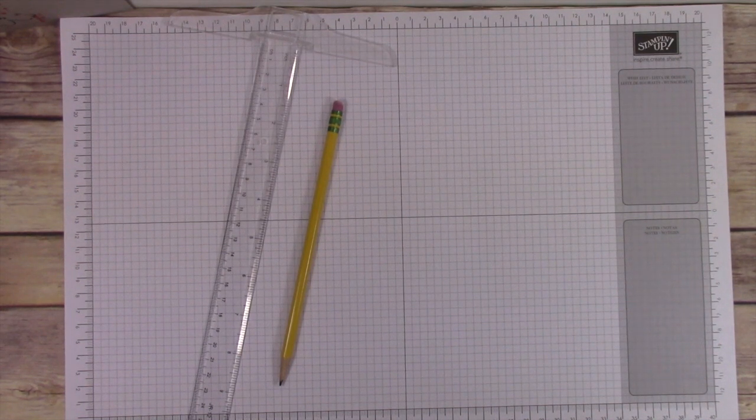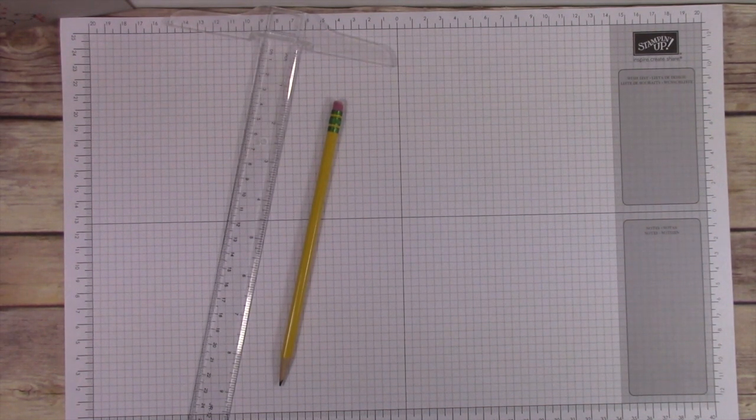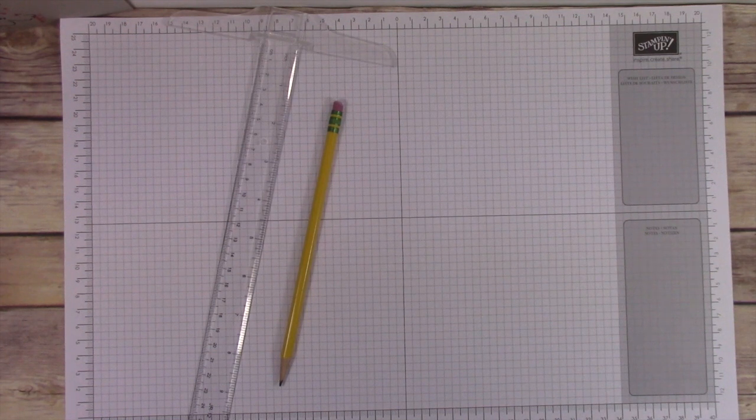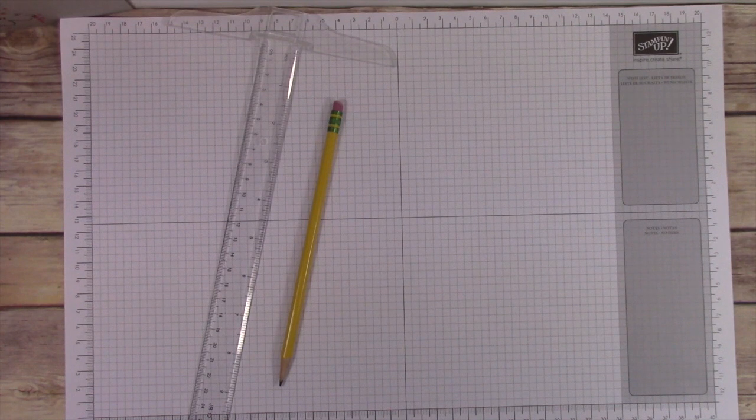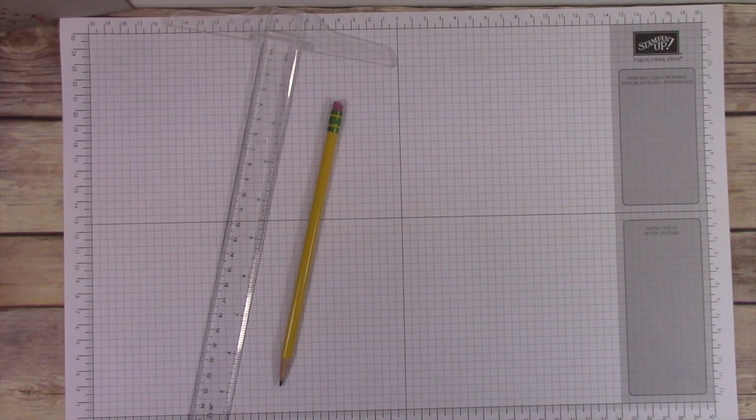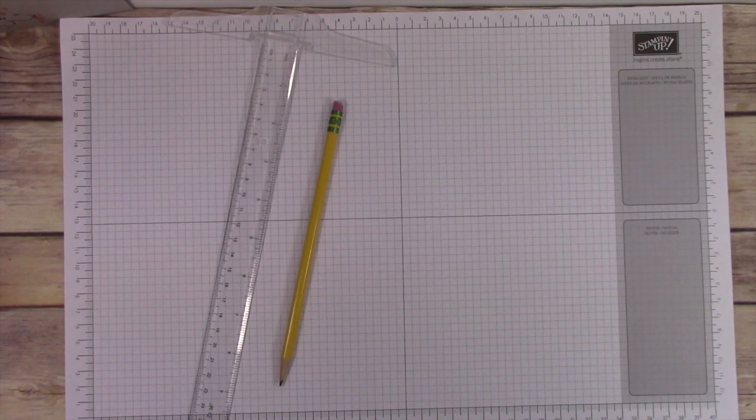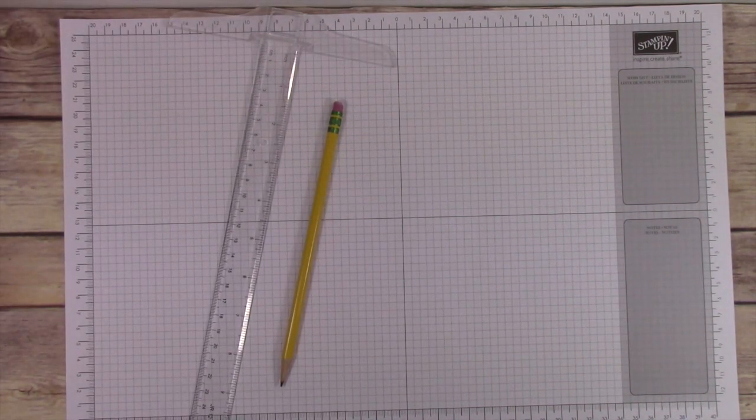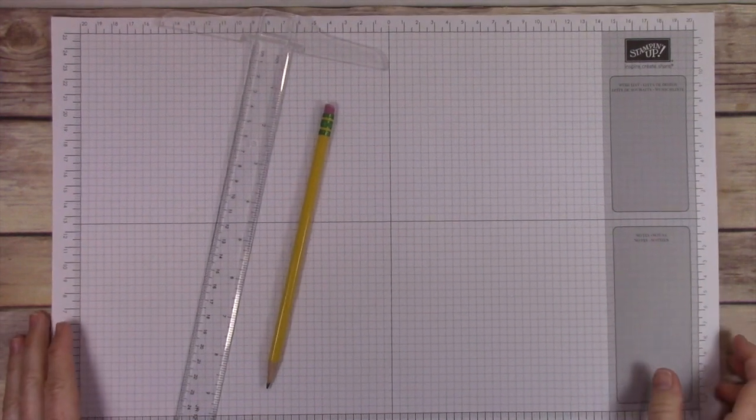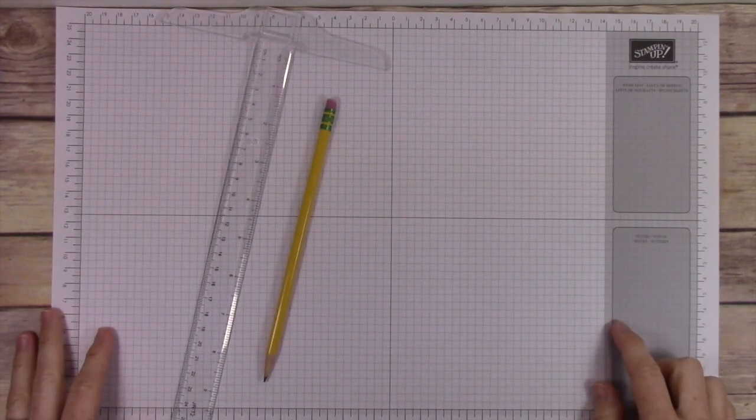You're going to get six banner pieces out of one sheet of 12 by 12 paper, so I just want you to know that ahead of time. I'm going to have pictures over on my blog showing you what the finished banner looks like along with some other goodies that I created, so you'll be able to check that out.